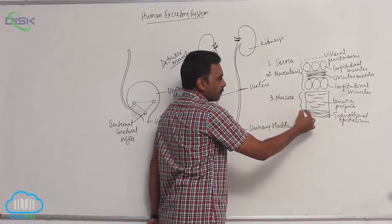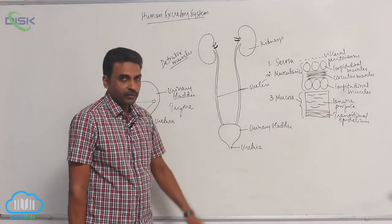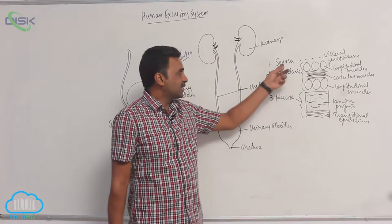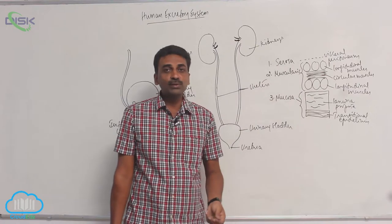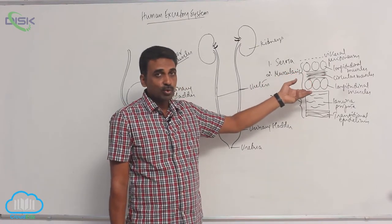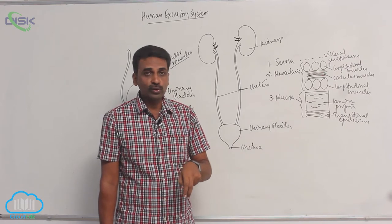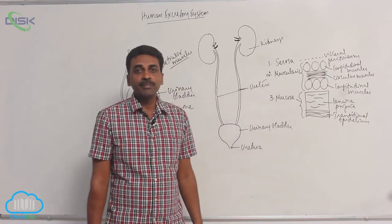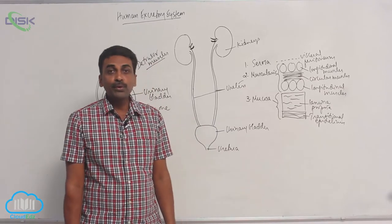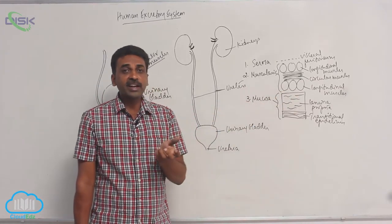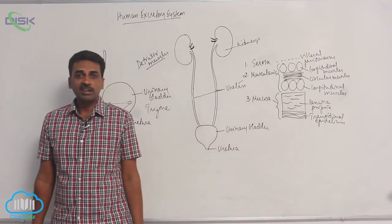To summarize the layers of the wall of the urinary bladder: the outermost layer is the serosa, which is the visceral peritoneum. That is followed by the muscularis, which consists of smooth involuntary muscles arranged as longitudinal, circular, and longitudinal — also called detrusor muscles. That is followed by the mucosa, which contains the lamina propria with blood vessels, lymph vessels, nerves, and fibers, and then transitional epithelium.